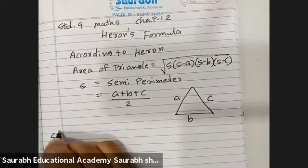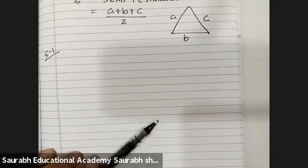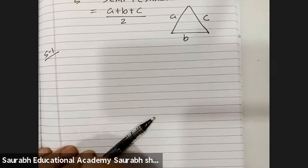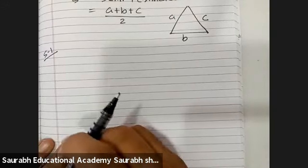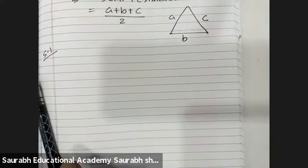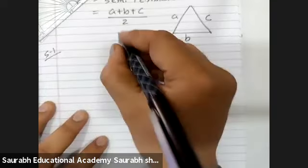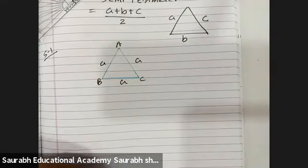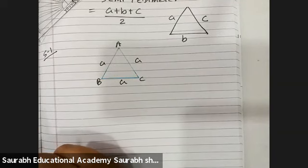Question number one. A traffic signal board indicating school ahead is in the shape of an equilateral triangle with side A. Let's draw the equilateral triangle ABC with all sides equal to A.